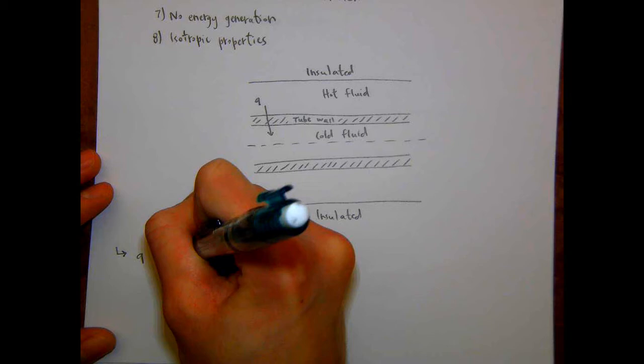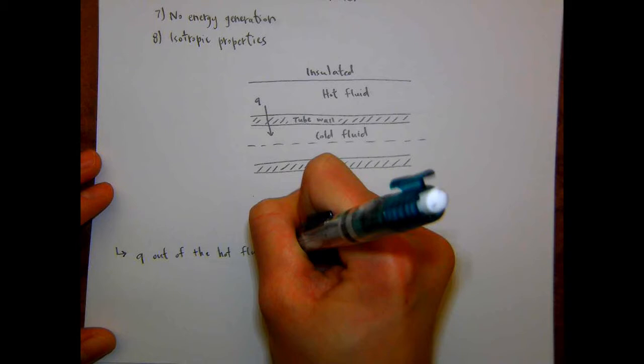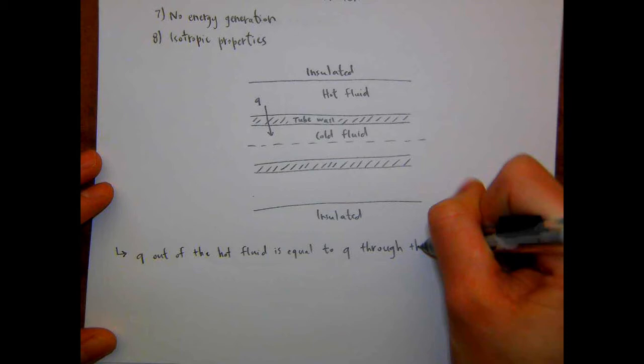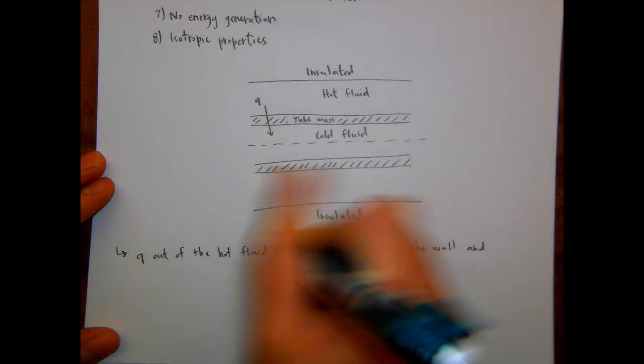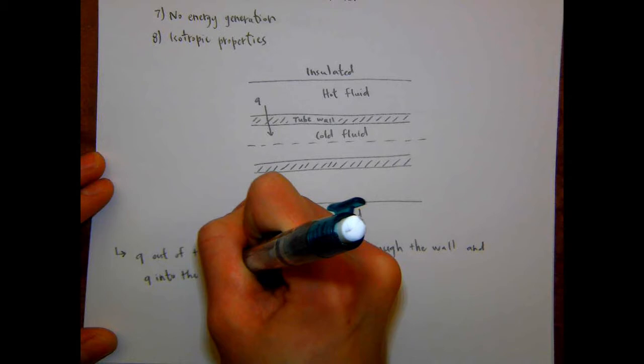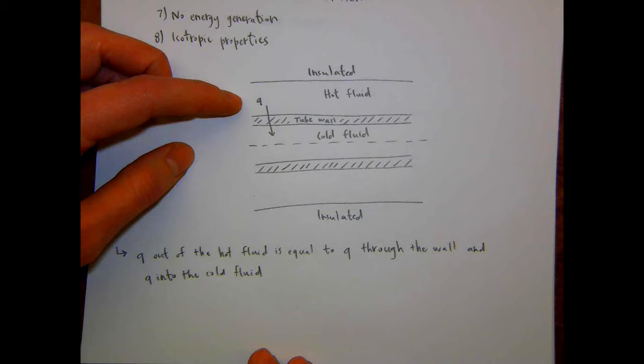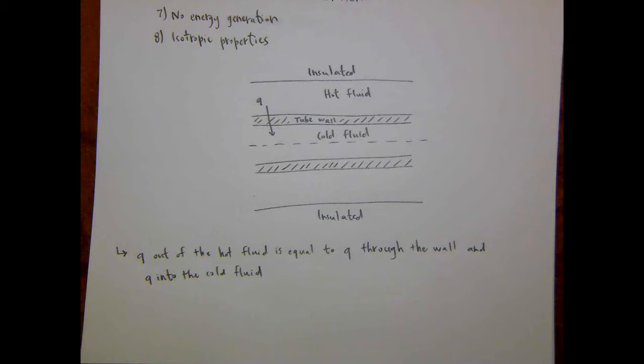Given the assumptions we set up, just like with the composite cylinder case, Q out of the hot fluid equals Q through the wall and Q into the cold fluid. This enables us to say that the heat transfer rate through all three sections is equal to each other.